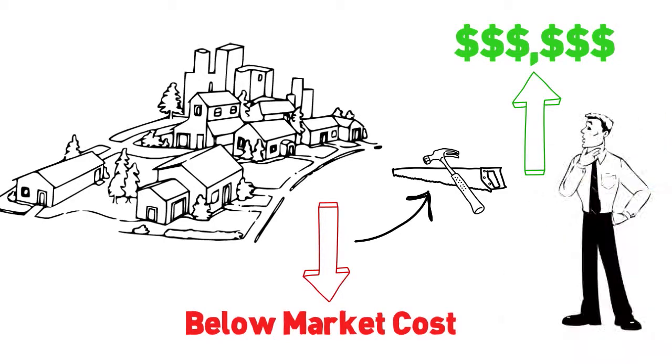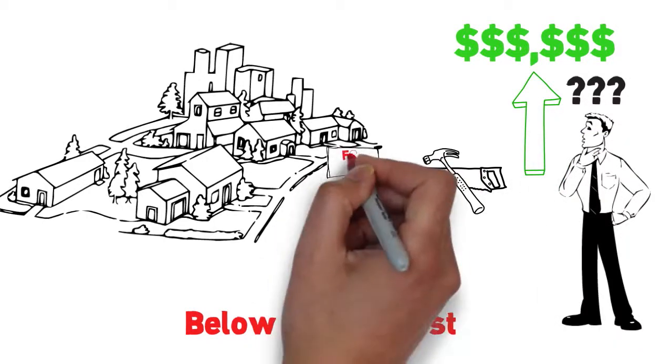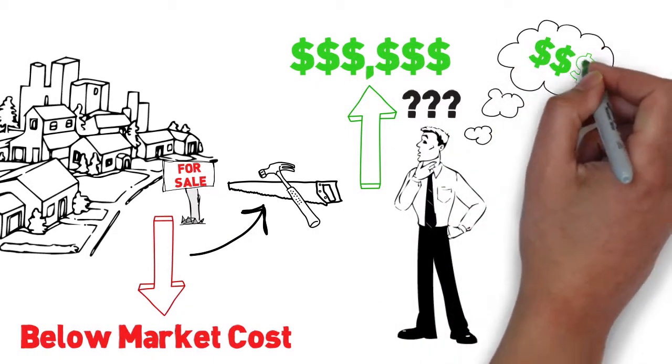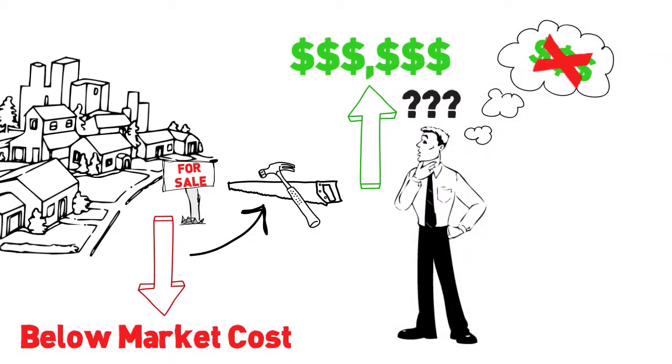But what Charlie didn't know was where to find them, and even if he could find these hidden deals, Charlie didn't have the cash or access to credit to purchase them even if he wanted to.